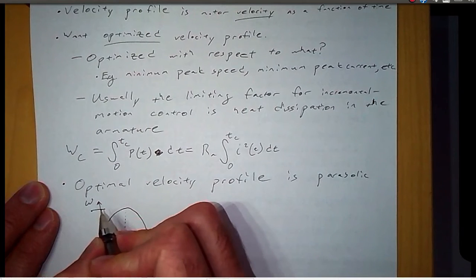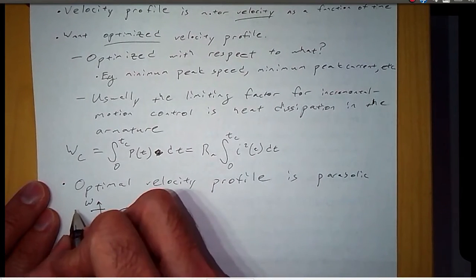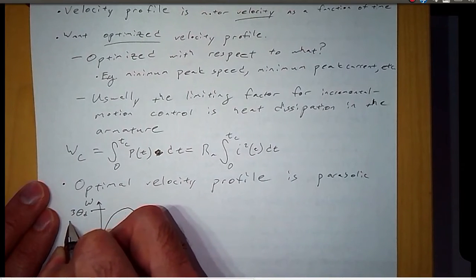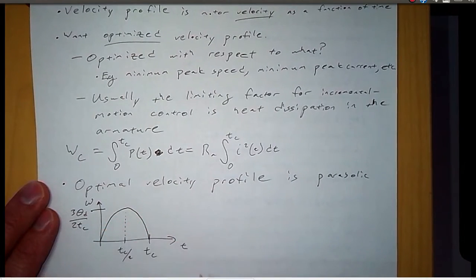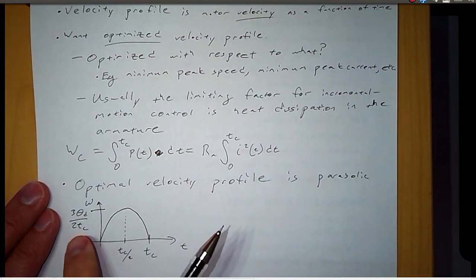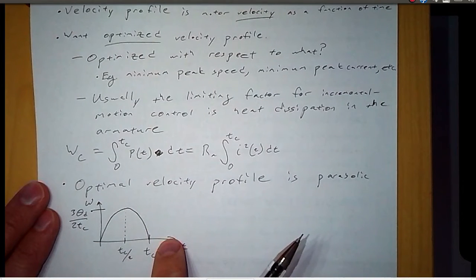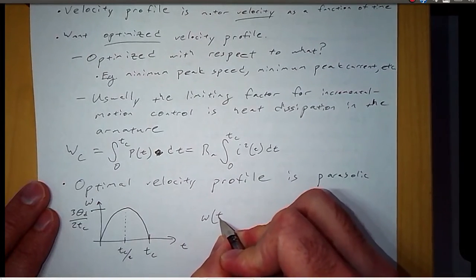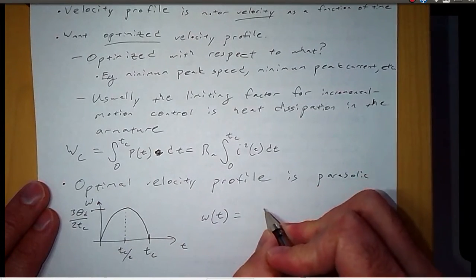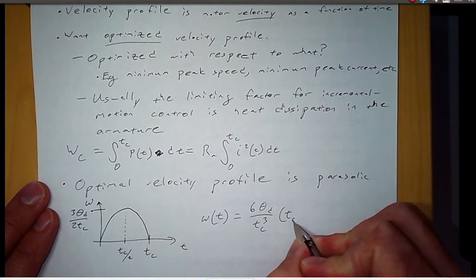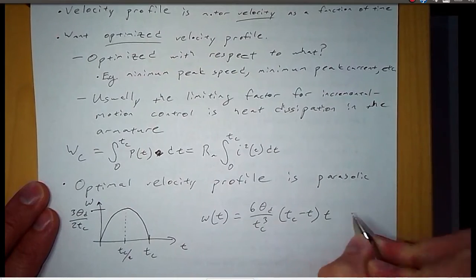The magnitude of that peak velocity is three times theta d divided by two t sub c. And this is for the parabolic velocity profile. And the equation here for the speed as a function of time is six theta d over tc cubed tc minus time times time.